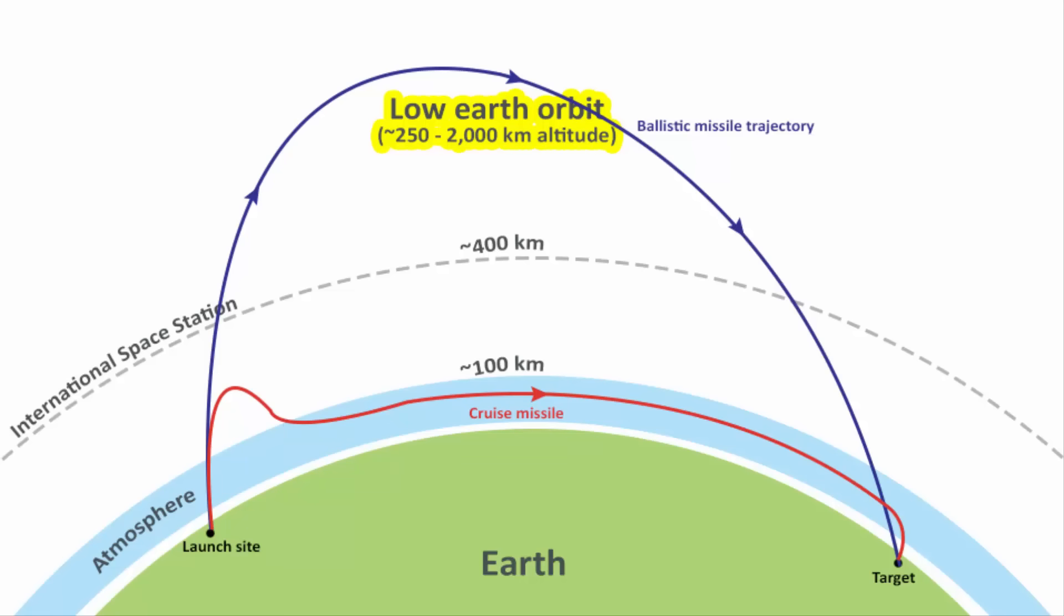Cruise missiles also form a comparatively smaller parabola. After that, it goes straight and can perform a variety of maneuvers depending on the program that is set.